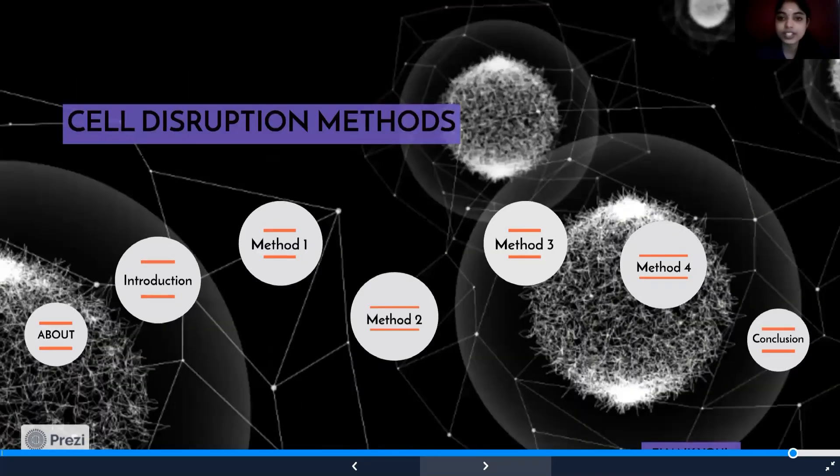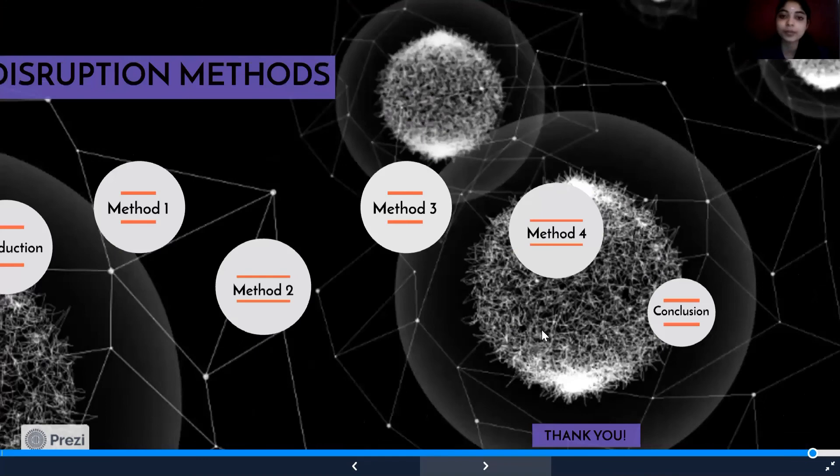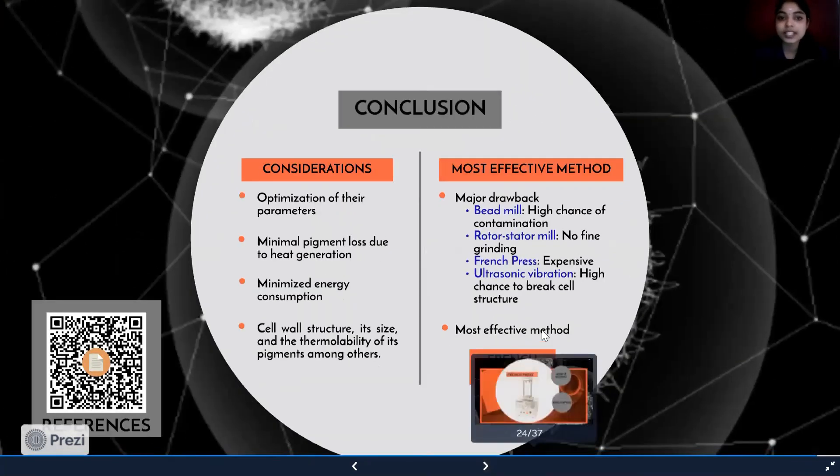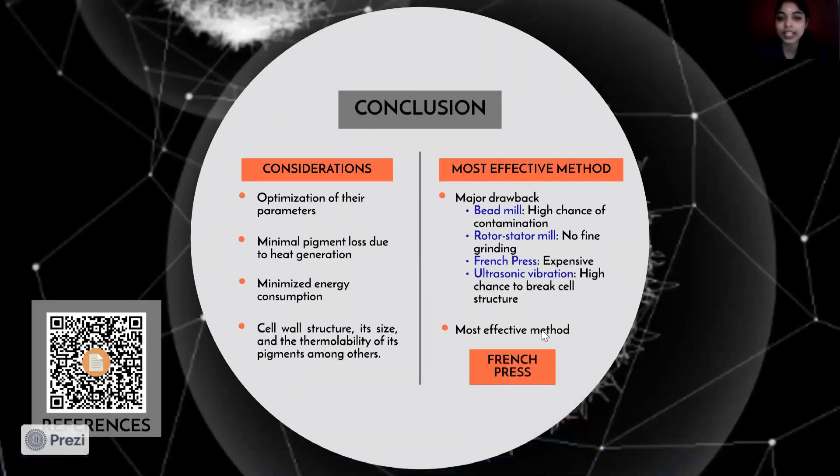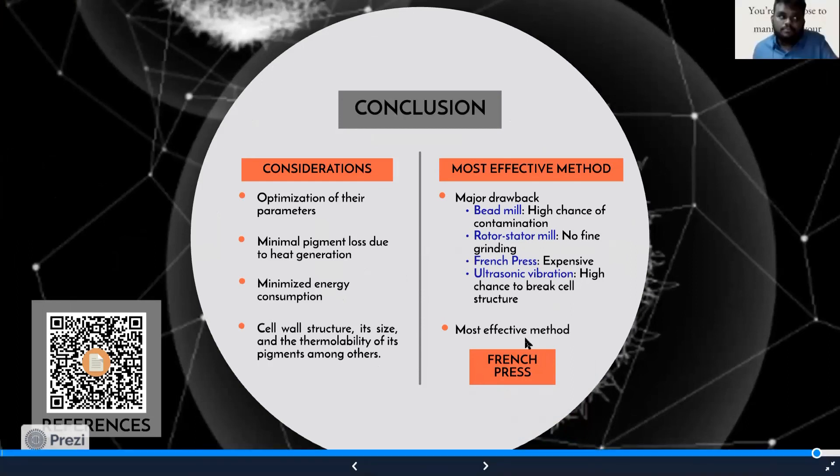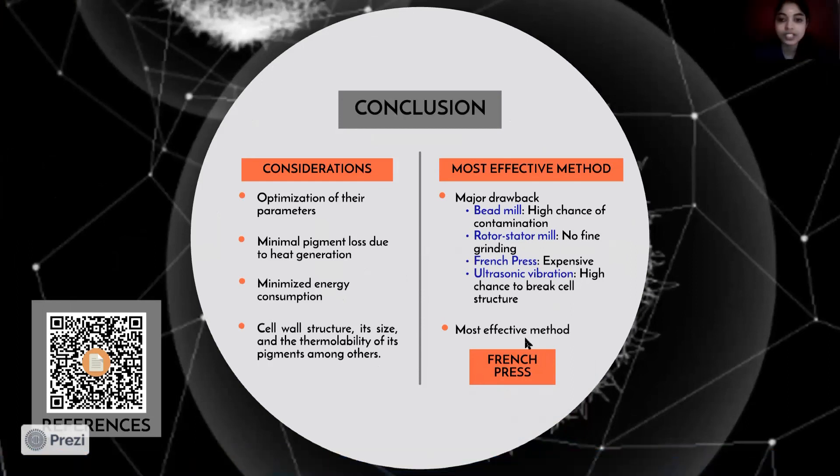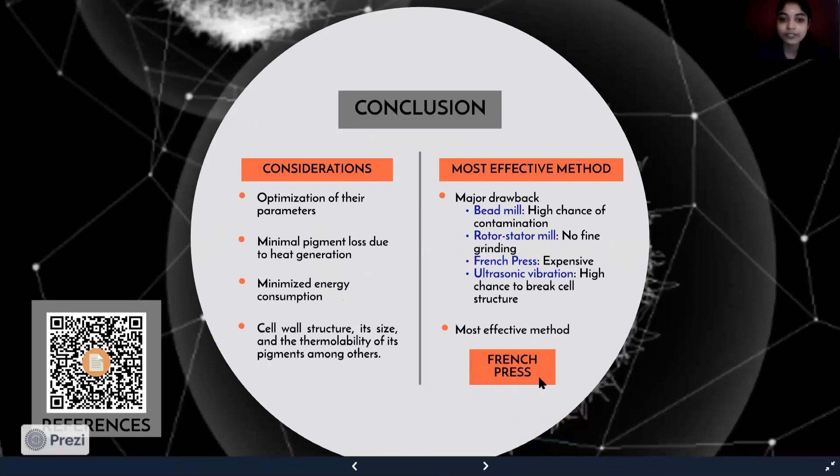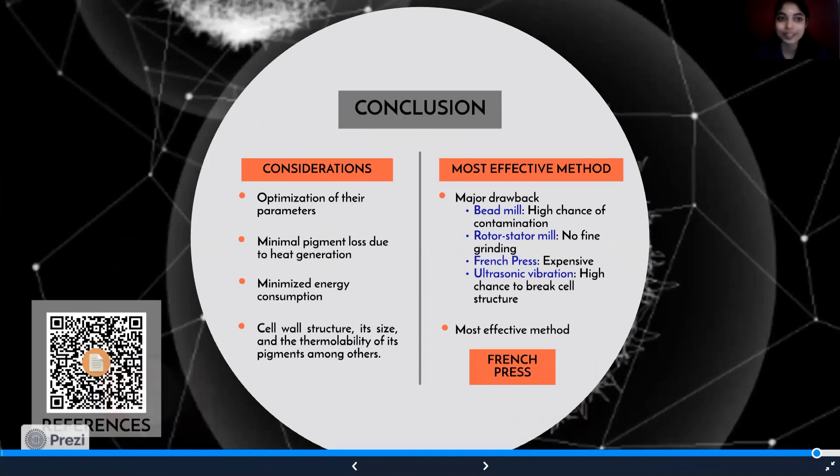In conclusion, there are several considerations that should be studied before choosing the appropriate method for cell disruption, such as their optimum parameters and energy consumption. The four methods proposed have their own drawbacks. Therefore, we have suggested that the French press is the most effective method because it is scalable, has high efficiency, and is easily adapted to different sizes of samples. At the bottom on your left, we have attached our QR code for our references for this presentation. That's all from us. Thank you very much.